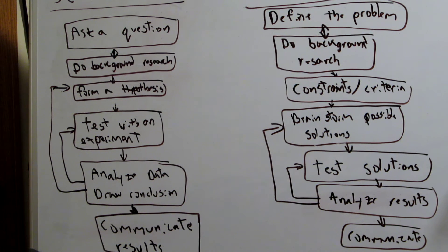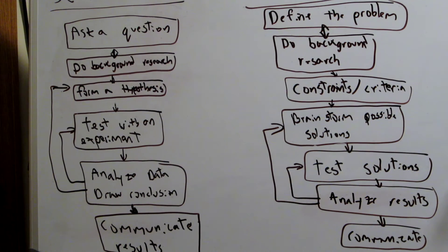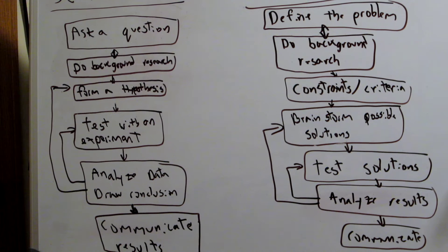After that you're going to analyze your results, making sure that they still line up with the criteria and constraints that you have. Make sure everything was okay. And just like the scientific method, you should be able to recreate your results through this. After that you're going to communicate your results. And that's a basic rundown of the engineering design process.